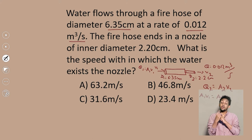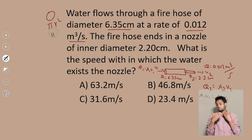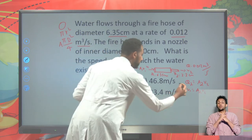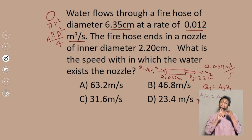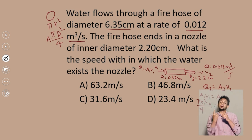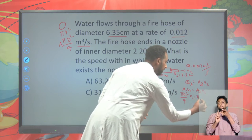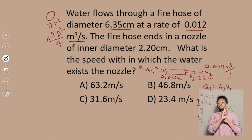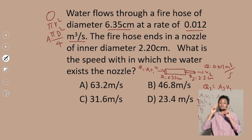Since both pipes have circular cross-sections, area is π D² / 4. So: π D1² / 4 × V1 = π D2² / 4 × V2. The π/4 cancels, giving us the relation: V2 = (D1/D2)² × V1. We know D1 = 6.35 cm and D2 = 2.2 cm, so we can find the ratio between the velocities.